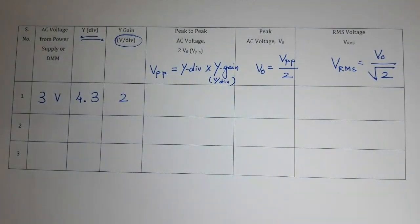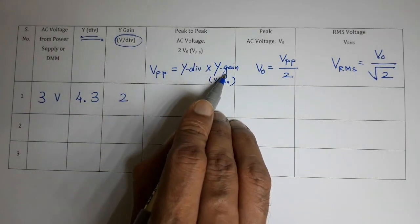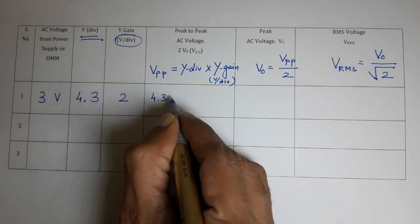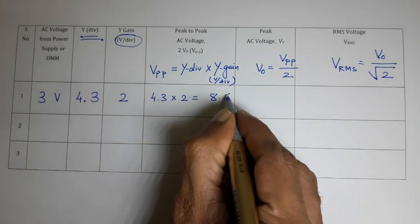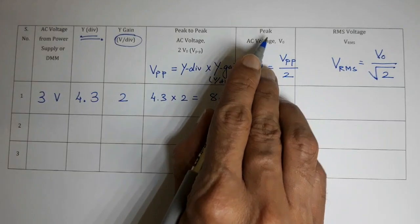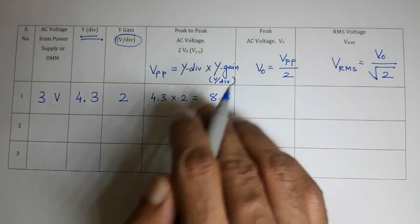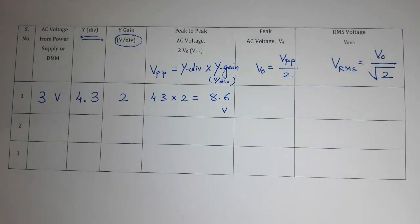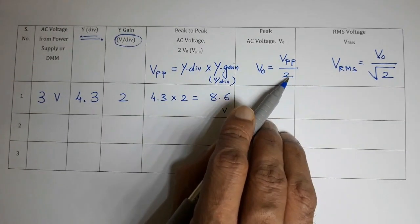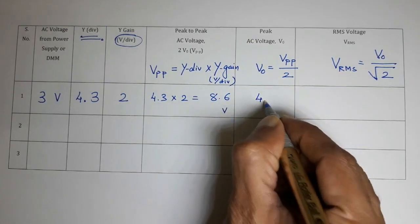Now calculate the peak to peak voltage VPP. The formula is: VPP = Y division × Y gain = 4.3 × 2 = 8.6 volts. Then V0, the peak AC voltage or amplitude, equals VPP divided by 2 = 8.6 ÷ 2 = 4.3 volts.